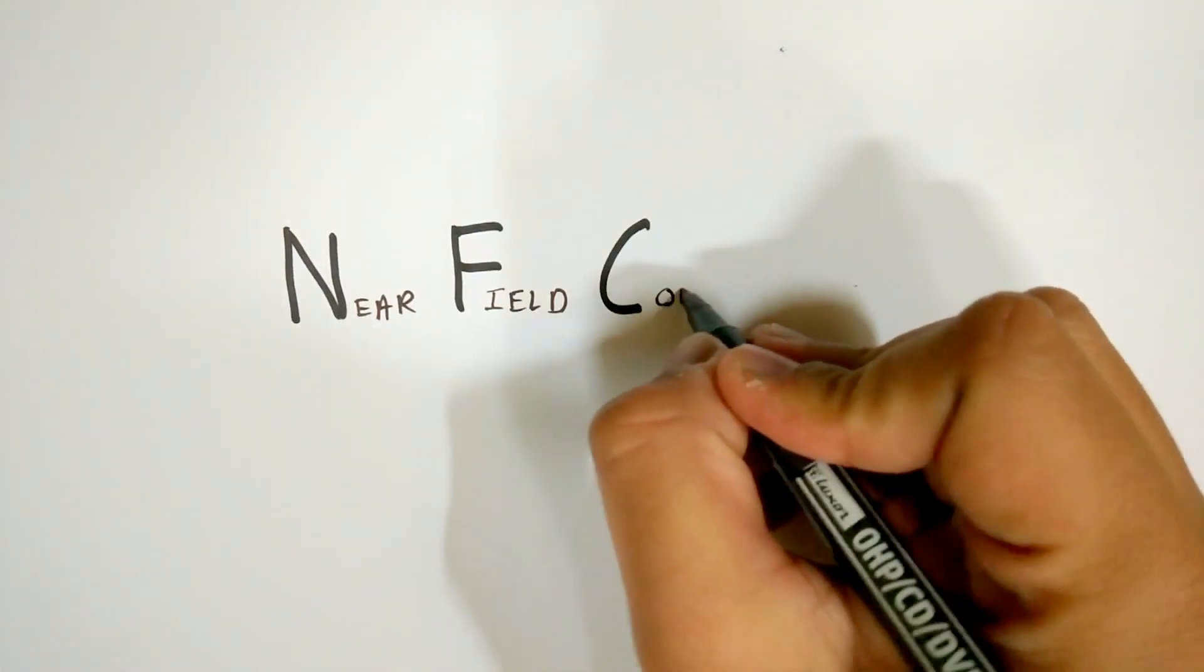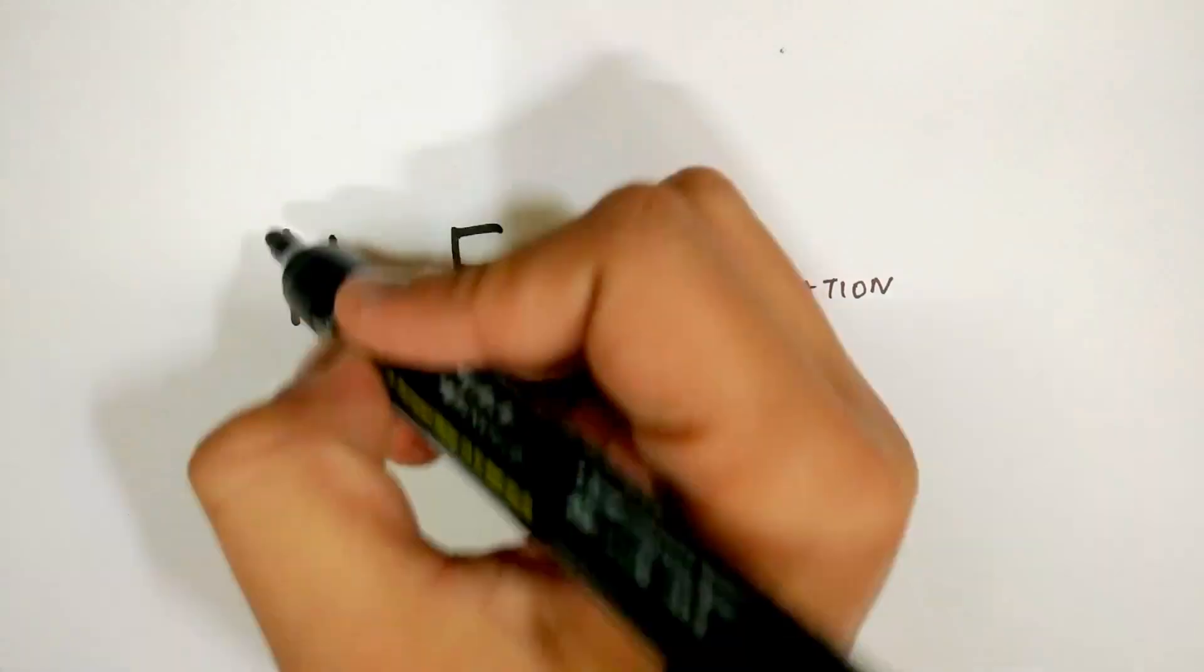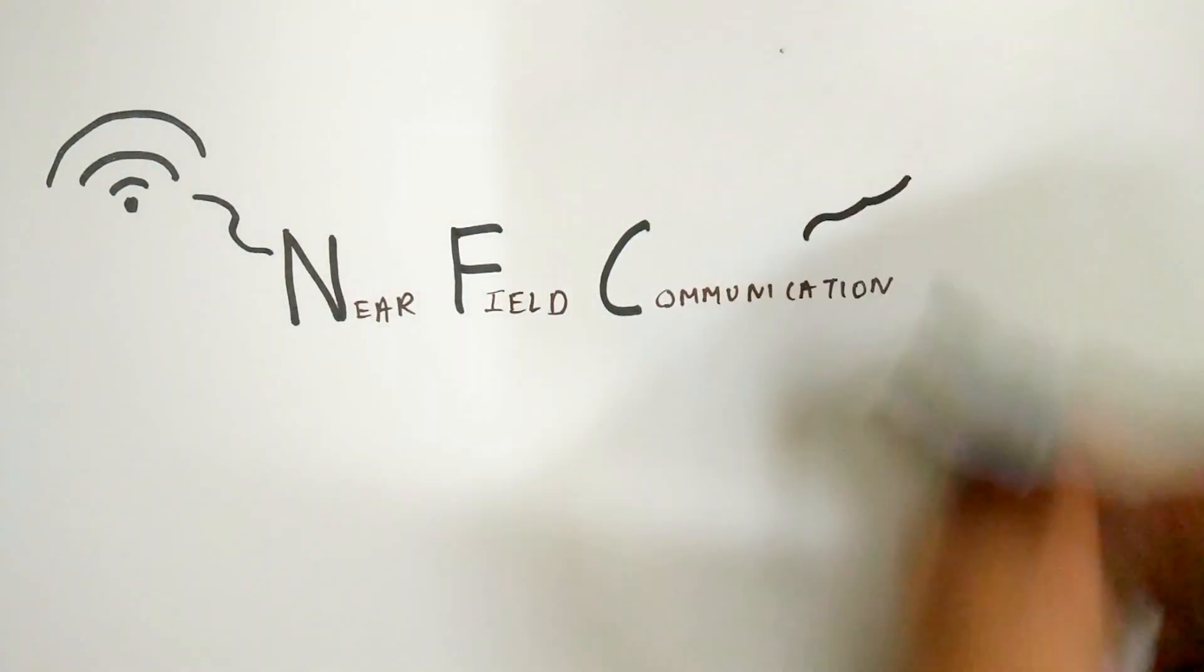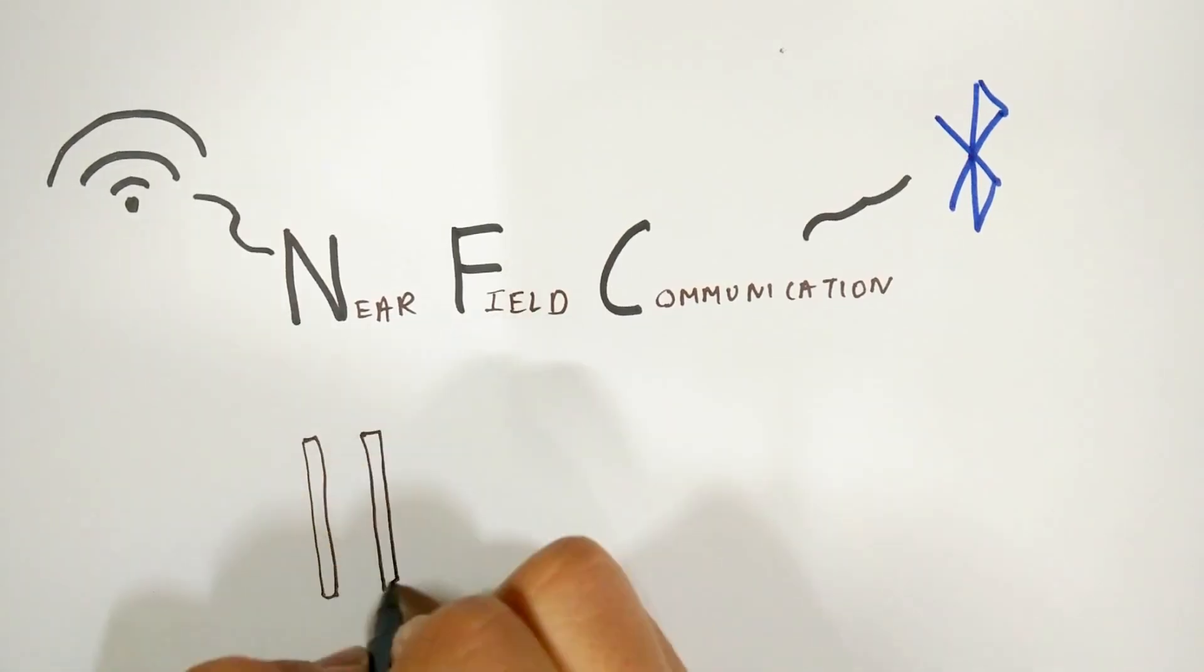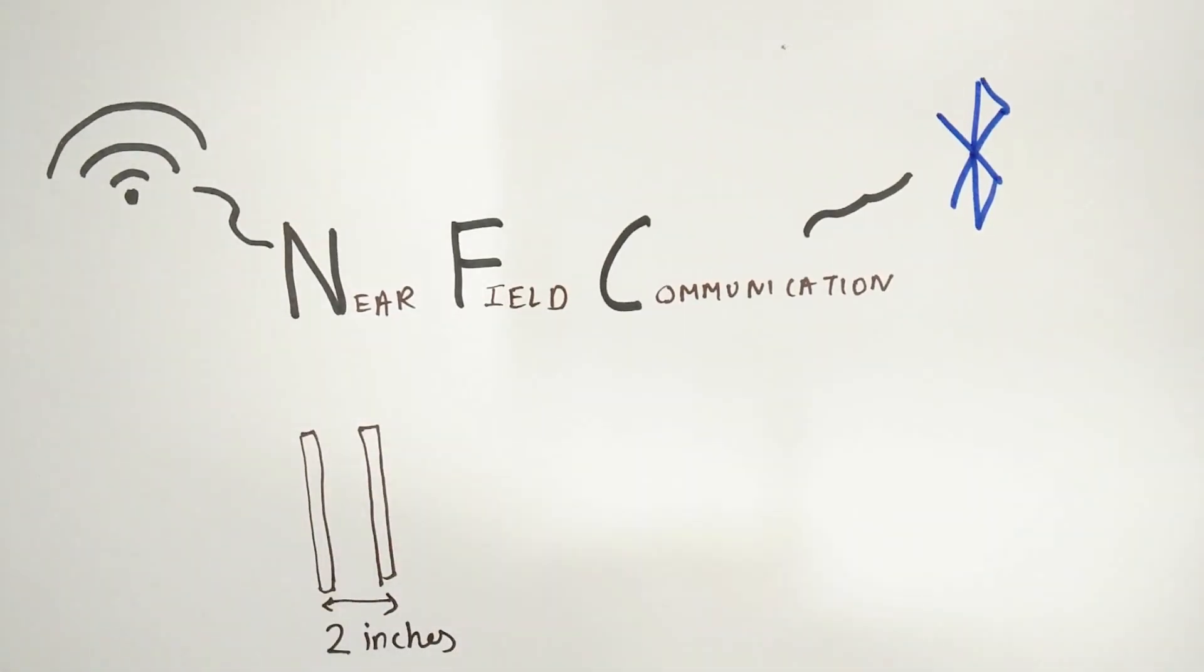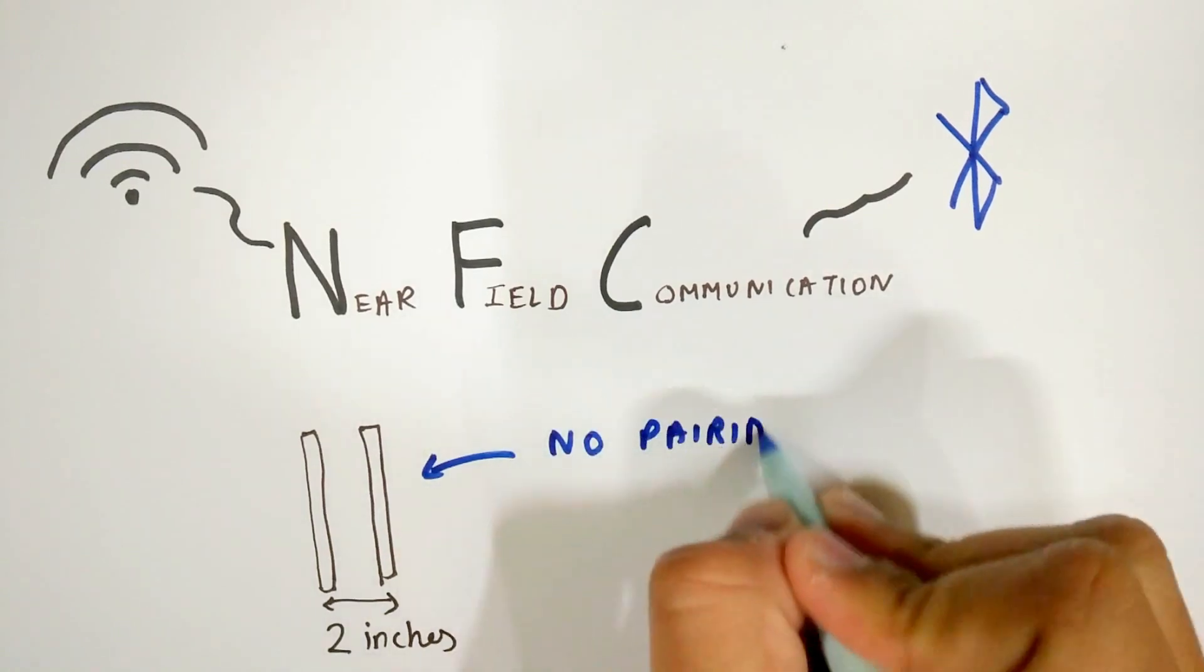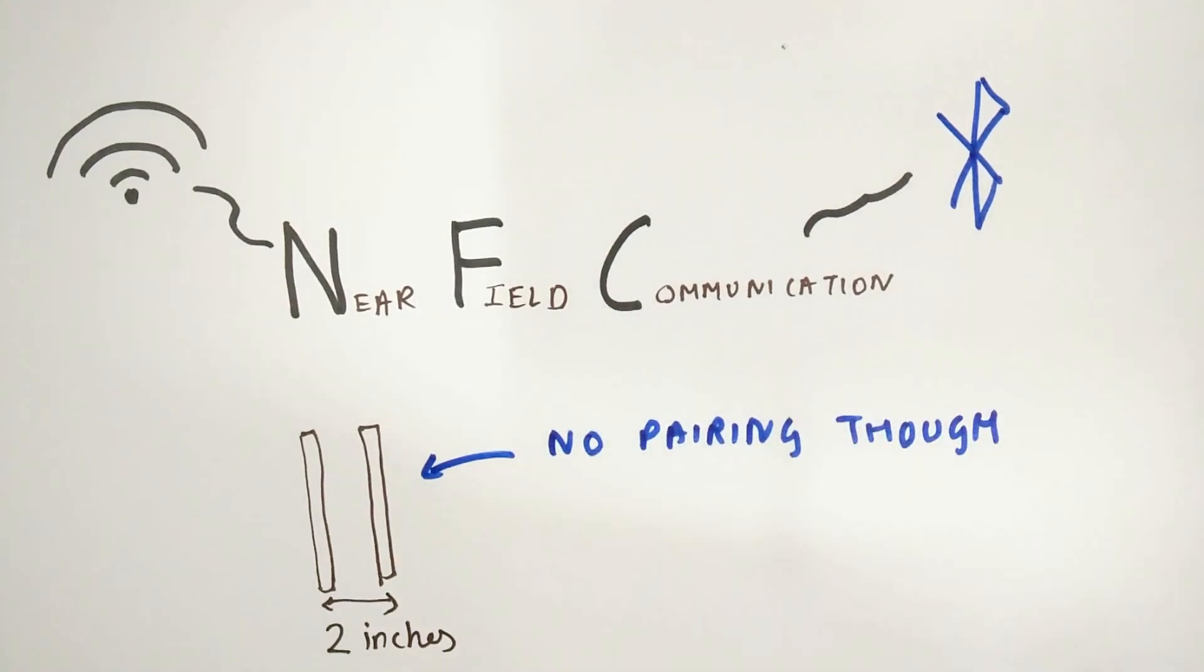Near Field Communication or NFC is similar to Bluetooth and Wi-Fi as it allows communication and data transfer between two devices. The only constraint is that NFC requires the devices to be within two inches or five centimeters of each other, but the benefit is that you don't need to pair the two devices.